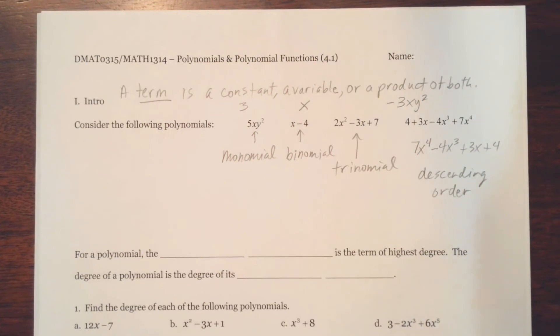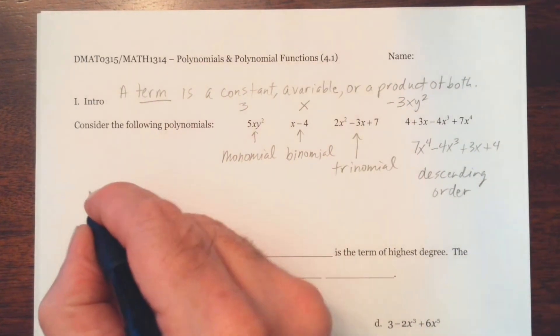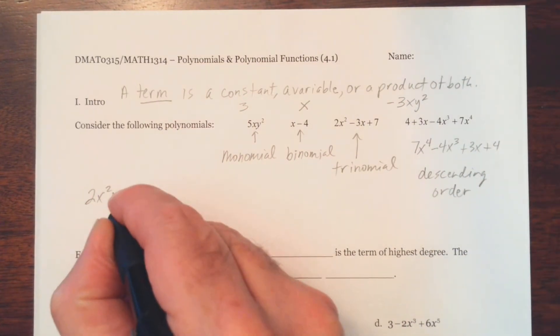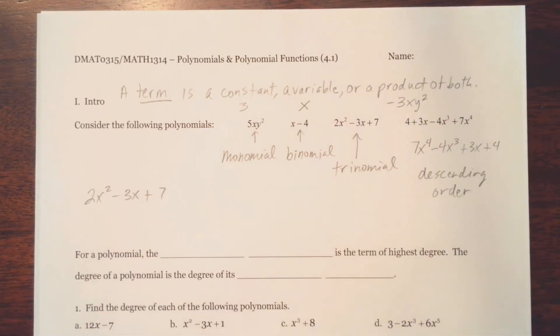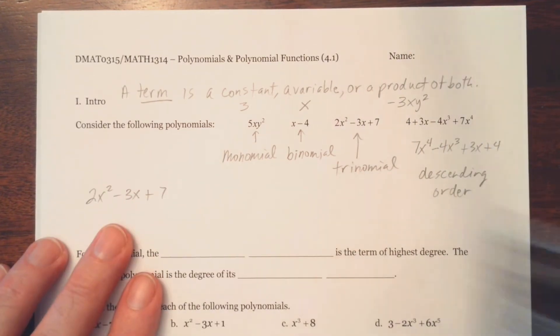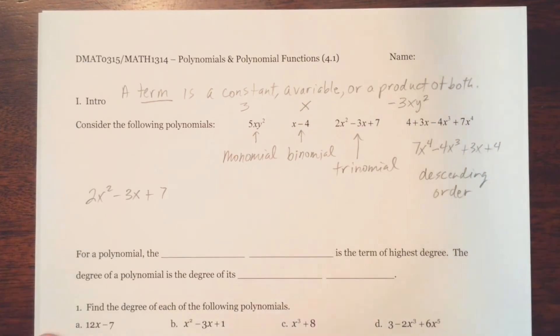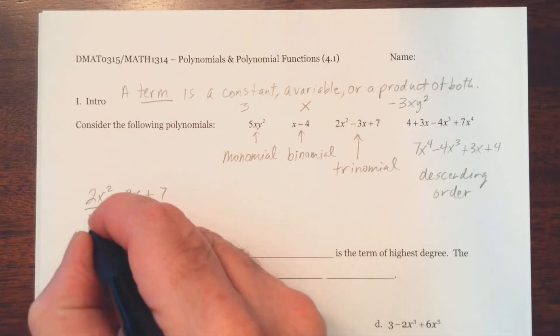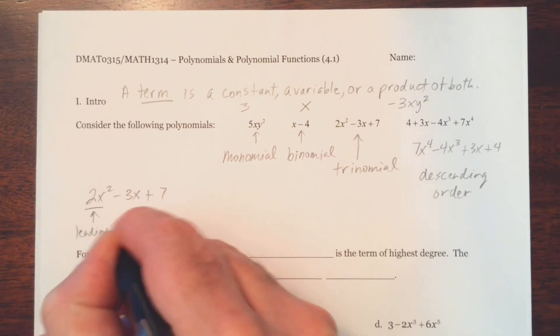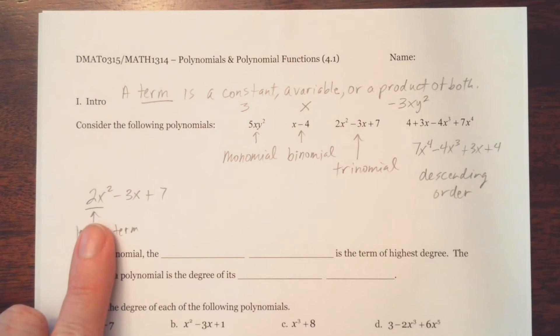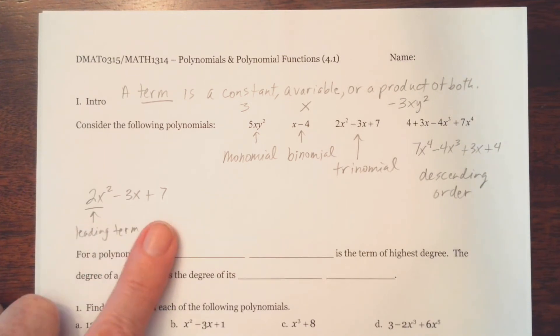Now before we go any further I want to point out, for example, with 2x squared minus 3x plus 1. Of course this is our trinomial. So we have three terms. We call this term the leading term. And it's called that because this term has the highest degree of all these three terms. So we call it the leading term.